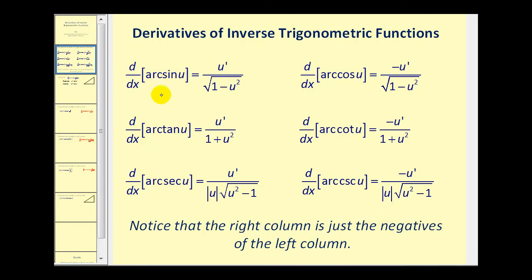The derivative of arc sine u and the derivative of arc cosine u are just opposites of one another. The same is true for the derivative of arc tangent u and arc cotangent u, and the derivative of arc secant u and arc cosecant u.